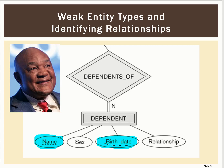So what you might be thinking is: maybe I can combine birth date and name together to accommodate George Foreman, and then I would have to put a dashed underline underneath birth date. Except that would not be correct. The reason is that underlining two attributes means that either one could be the partial key, so that would not work.